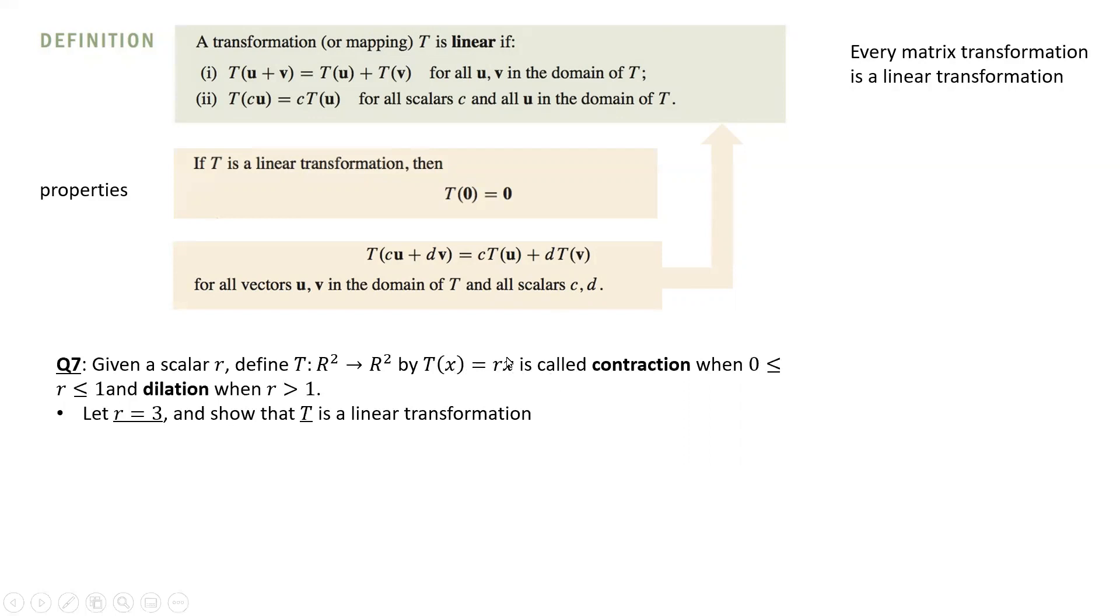However, the value of this multiplier r would make a huge difference, especially from a geometrical point. For example, if we take number r which is between zero and one, when we multiply by the vector, we will get a vector which is shorter than the original one. We call this transformation contraction.